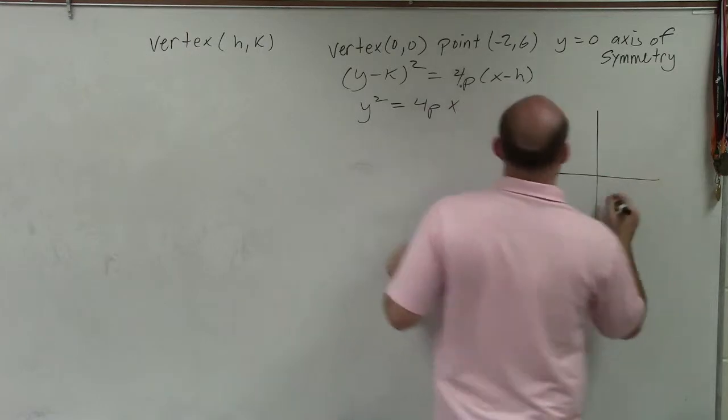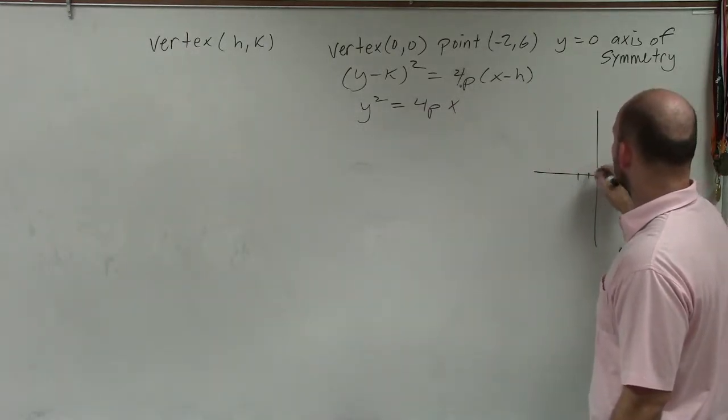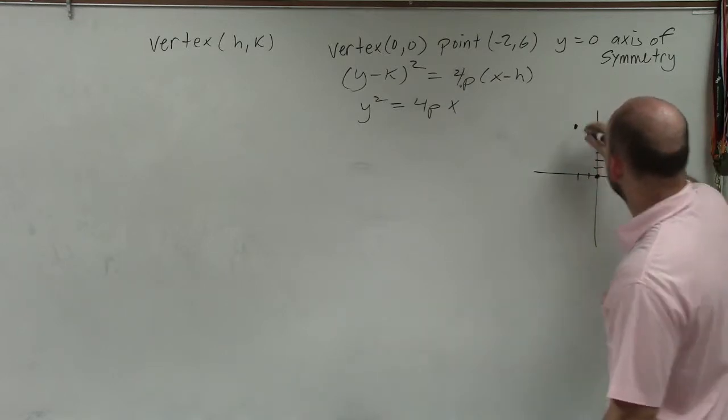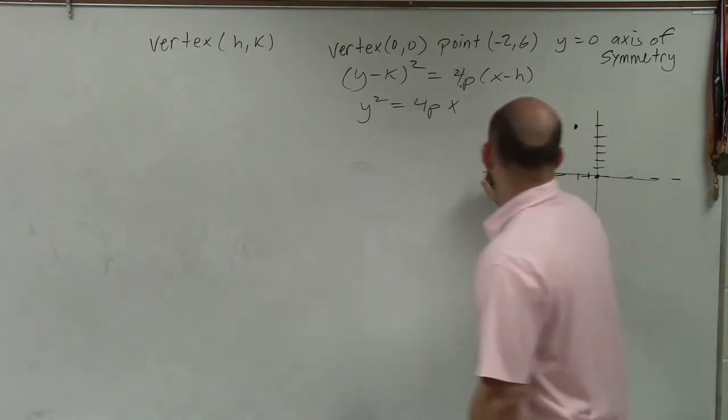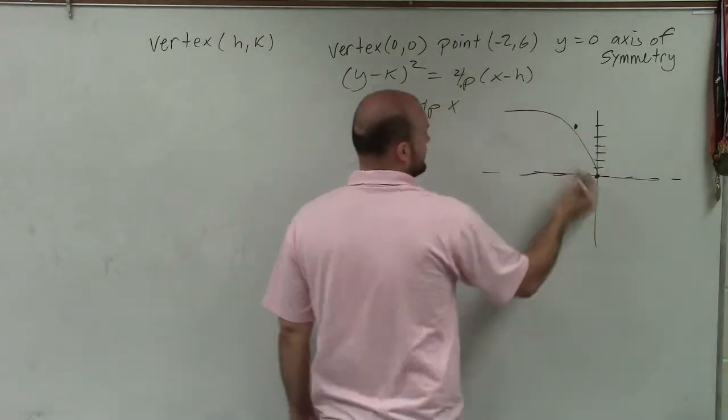So let's just plot these points here real quick. So I have 0, 0, and I have the point negative 2, 6. And then y equals 0 is my axis of symmetry. So therefore, I can't have the graph open up to the right. It has to open up to the left.